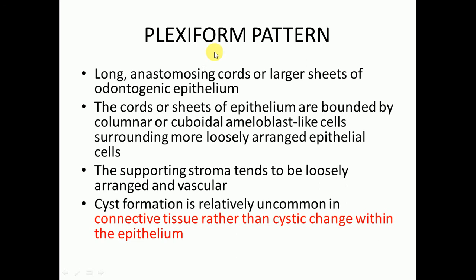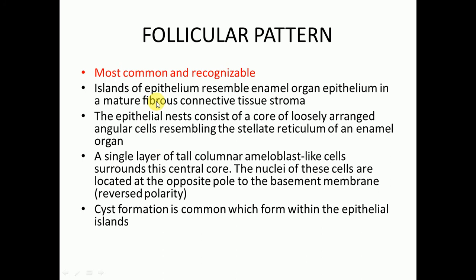In the plexiform pattern, there are long anastomosing cords or larger sheets of odontogenic epithelium. The cords or sheets are bounded by columnar or cuboidal ameloblast-like cells surrounding more loosely arranged epithelial cells. The supporting stroma tends to be loosely arranged and vascular. Cyst formation is relatively uncommon in the plexiform type and occurs in the connective tissue rather than within the epithelium — contrasting with the follicular type, where cystic changes occur within the epithelium.